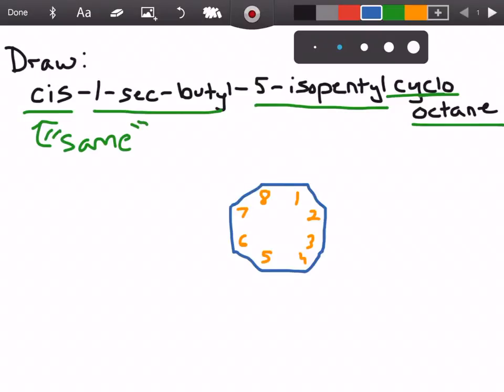That means that when we draw our orientation we're going to have the compound on the exact same side. So we can use wedges or we can use dashes. It really doesn't matter as long as we use the exact same kind for both. Now we have 1 and we have 5. So that means that they're going to be right across from each other. So let's do wedges.